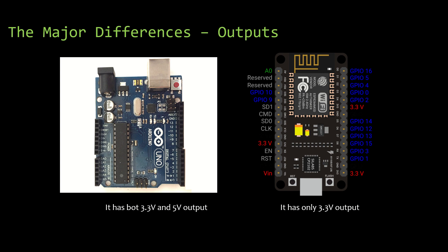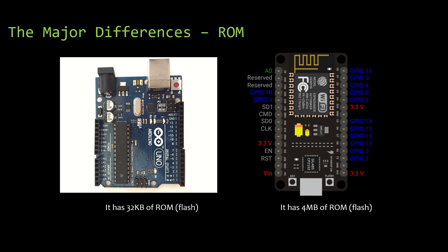Coming to the output voltage: Arduino UNO supports both 3.3V and 5V output, but NodeMCU has only 3.3V output support. You can see that in the pinout on screen — 3.3V and 5V are both supported on Arduino UNO, but when it comes to NodeMCU it is only 3.3V. That's a major difference.